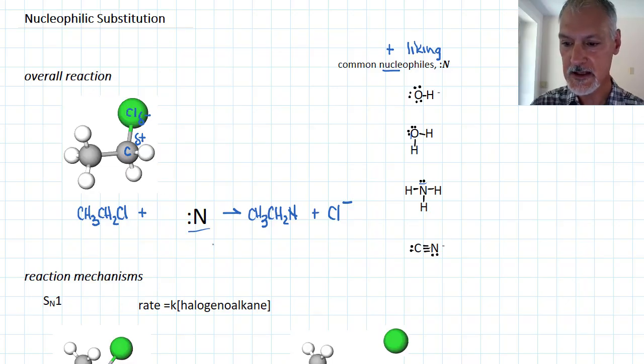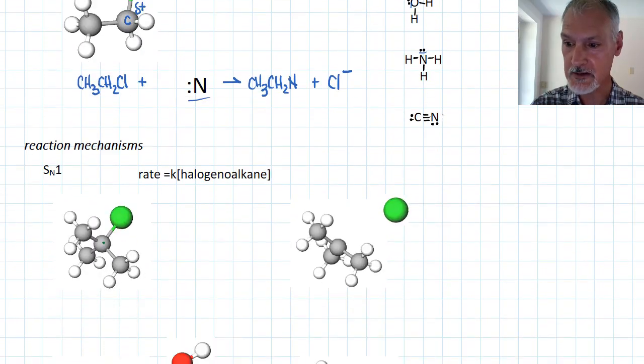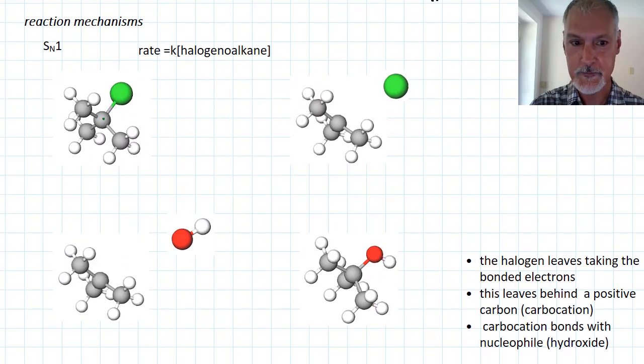What I want to take a look at now is the mechanism or the steps by which this reaction occurs. The steps depend very much on the type of halogenoalkane that you have. So in my first example here, let's consider this halogenoalkane. This is an example of a tertiary halogenoalkane. The carbon that is attached to the chlorine is attached to three others.